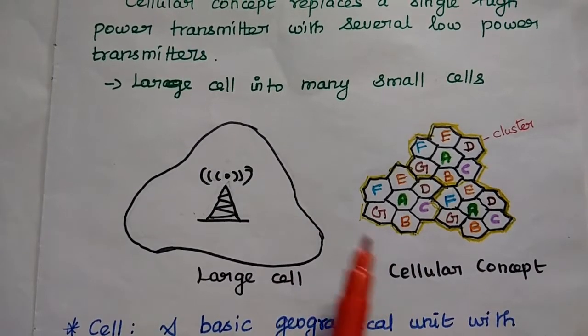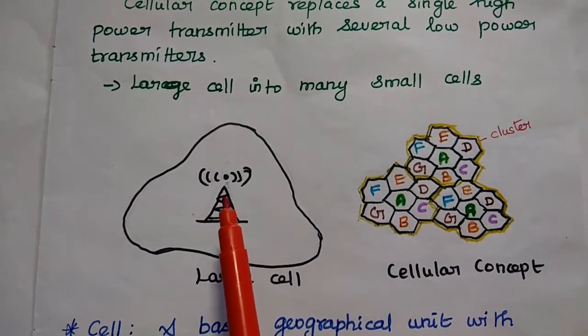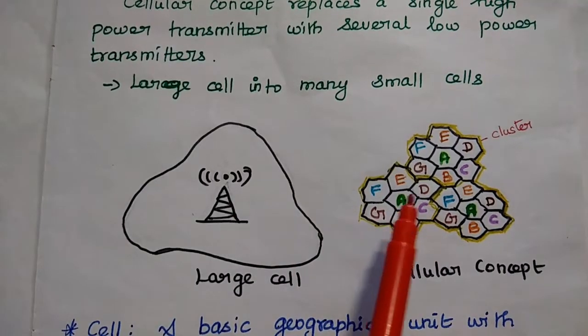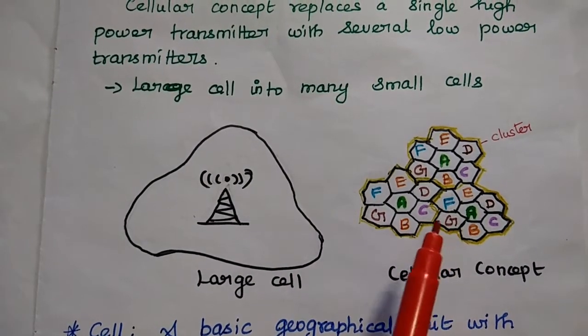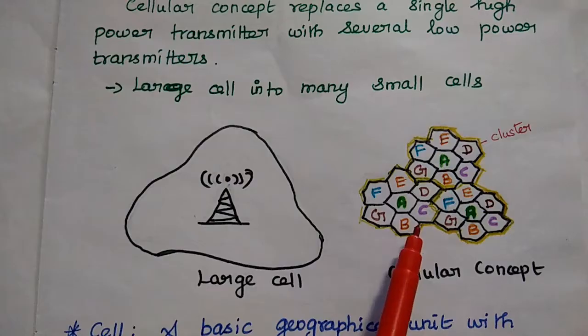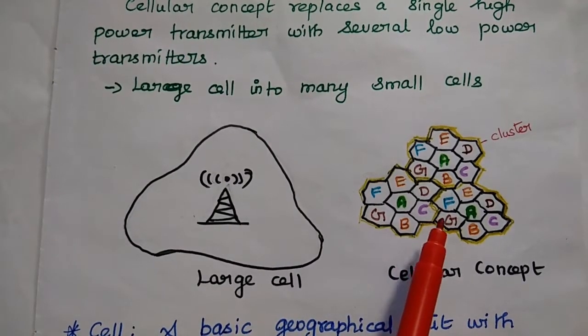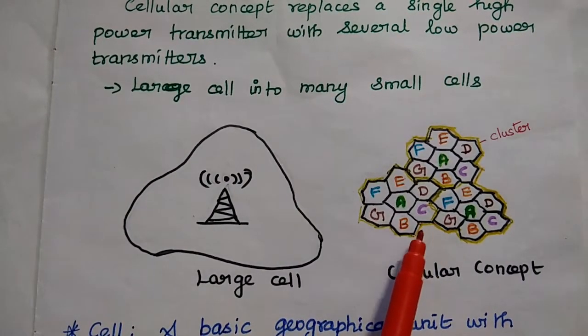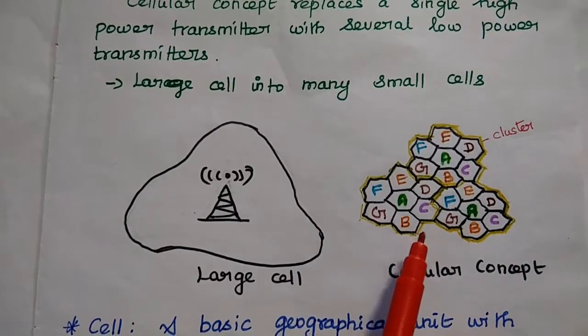The cellular concept replaces a single high power transmitter with many low power transmitters. Here, cell represents a basic geographical area with limited coverage. That is called as cell.